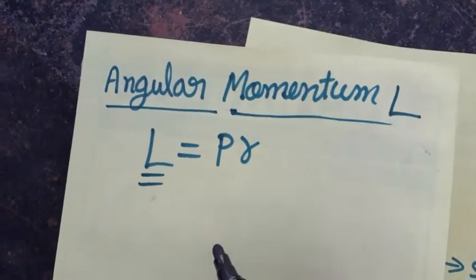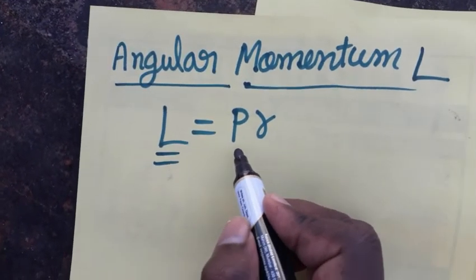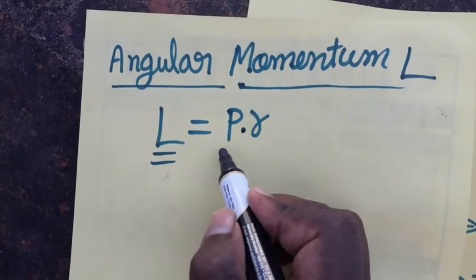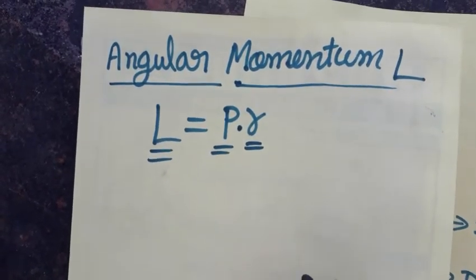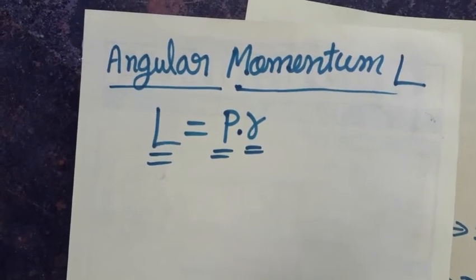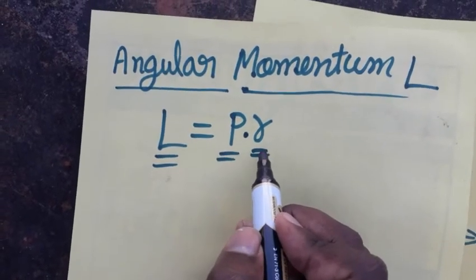The angular momentum symbol is L, so angular momentum is equal to the product of linear momentum and radius. Angular momentum means definitely radius will be there, so linear momentum into radius gives us angular momentum.